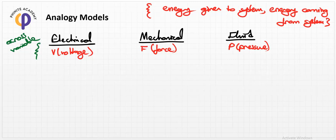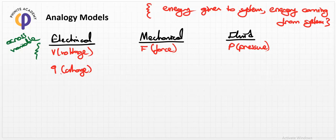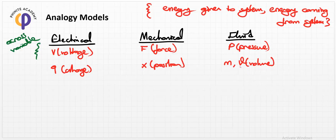If we have a system, it should store some energy form. The system receives input energy, stores it, and then produces an output. In the electrical domain we store charge; in the mechanical system we store position; and in fluid dynamics we store mass or volume. This is called the storage variable of the analogy.